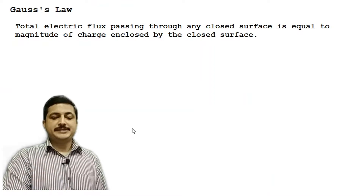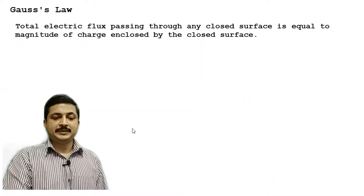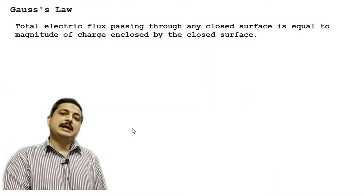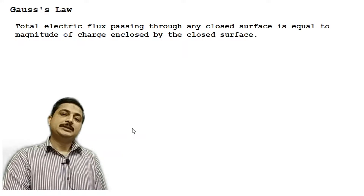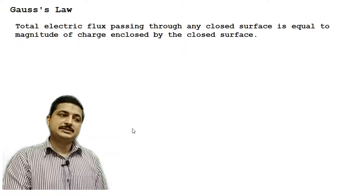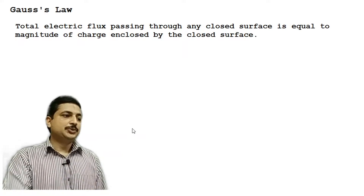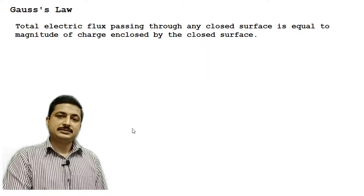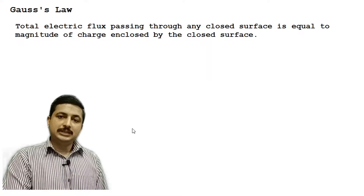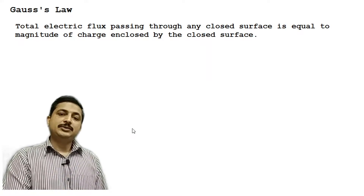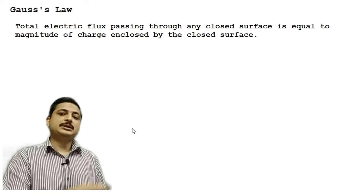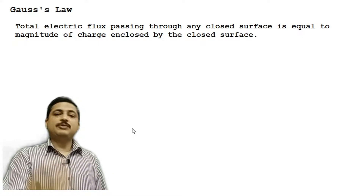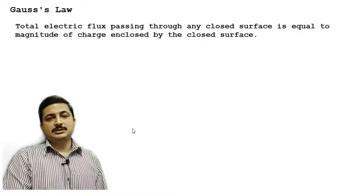What does Gauss's law say? Gauss says that the total electric flux through any closed surface is equal to the magnitude of total charges enclosed by that closed surface.